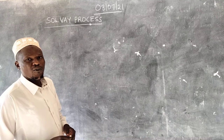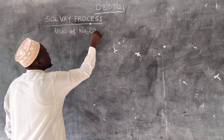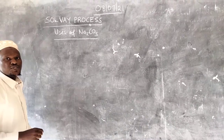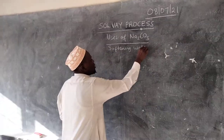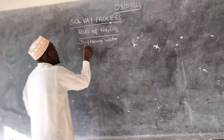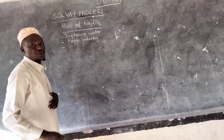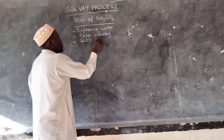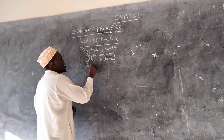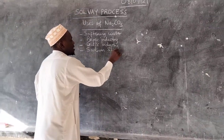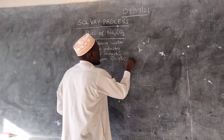What are the uses of sodium carbonate? Sodium carbonate is used in softening water. It is also used in the paper industry. Sodium carbonate is also used in the glass industry. Another use is that it is used to make sodium silicate, and this sodium silicate is used in making detergents.